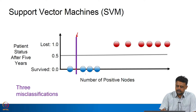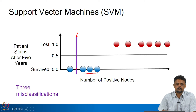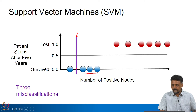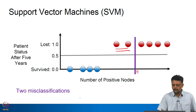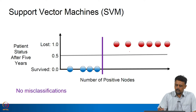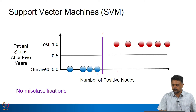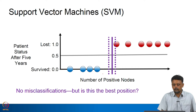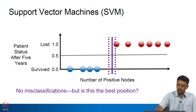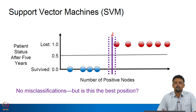If we draw a decision boundary at a certain point, we may have three misclassifications corresponding to those blue points. We can then try another decision boundary further over, but we may still have two misclassifications. However, if we move the line to some point in between — one green, one blue, one red — then we have no misclassifications. But there are multiple choices for this line and it is very difficult to determine exactly where to draw it. The idea behind SVM is to figure out where to draw this line.